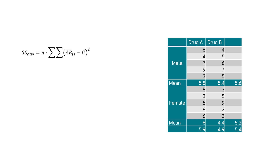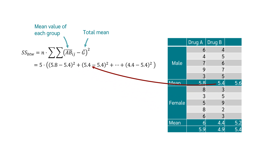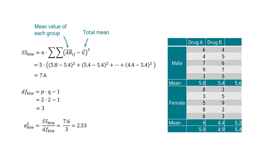Now we can calculate the sum of squares between the groups. For this we calculate each group mean minus the total mean: 5.8 minus 5.4 squared, plus 5.4 minus 5.4 squared, and the same for the other two values. We get 7.6. The degrees of freedom in this case are 3, giving a variance of 2.53.